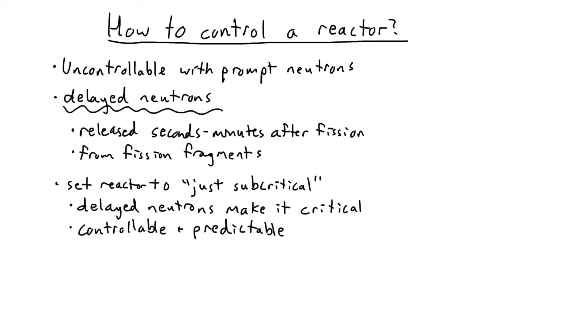These very important delayed neutrons make the reaction very controllable and very predictable. For example, say, a reactor running purely on prompt neutrons could double its power every hundredth of a second. With the addition of delayed neutrons, you would increase this to several seconds, so much more predictable.